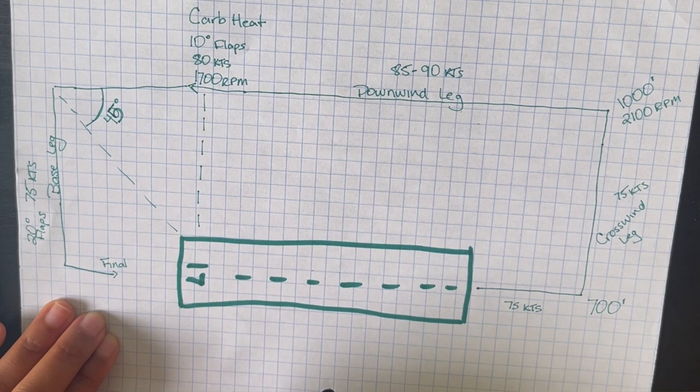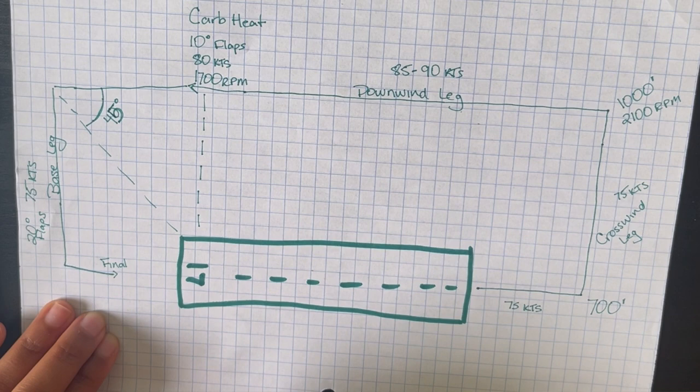At some point you're going to need to make your last turn, and that should get you aligned directly with your runway. That last leg is going to be called your final leg. On that final leg, depending on the weather, you'll put 30 degrees of flaps in and maintain about 65 to 70 knots.